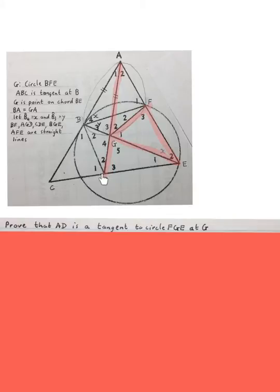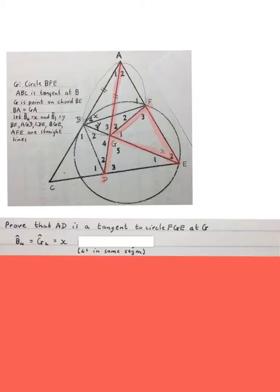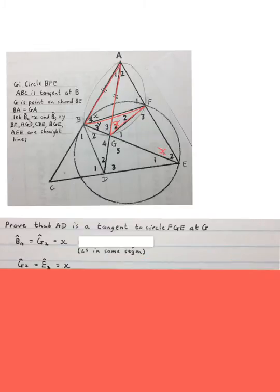The first thing we can write is B4 is equal to G2, is equal to X. Angles in the same segment. So in that new circle that we just proved, that B4 is equal to that G2 over there, they're both equal to X. Therefore, the G2 is equal to the E2, is equal to X.